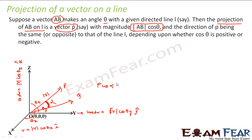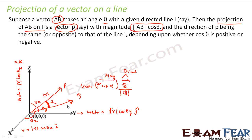The magnitude is p cos alpha, but I also need to find the direction. To find the direction, I take the unit vector of q, which is the q vector divided by the magnitude of q. So the whole projection is a vector: the magnitude part is p cos alpha and the direction part is q-hat. This gives us p cos alpha multiplied by q divided by magnitude of q, which is nothing but p dot q divided by magnitude of q.